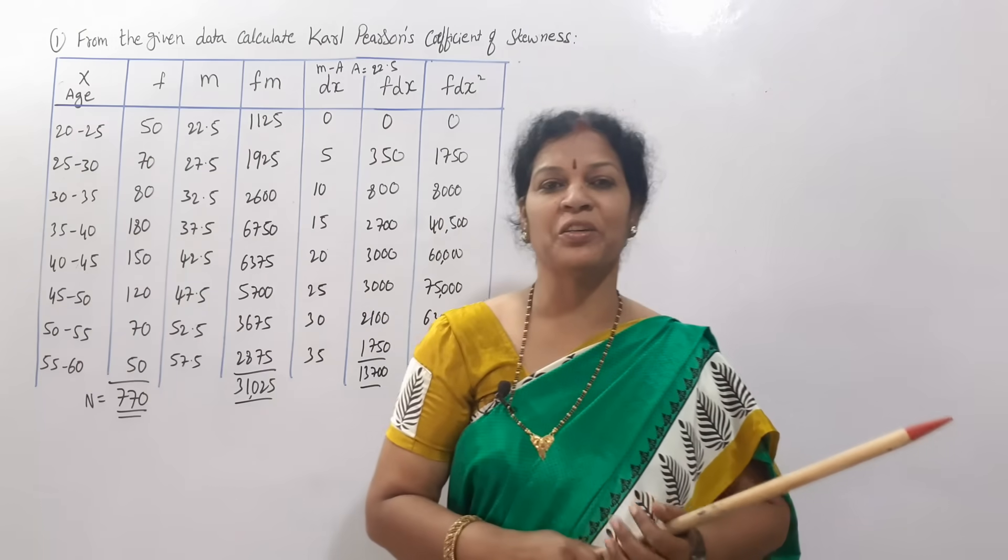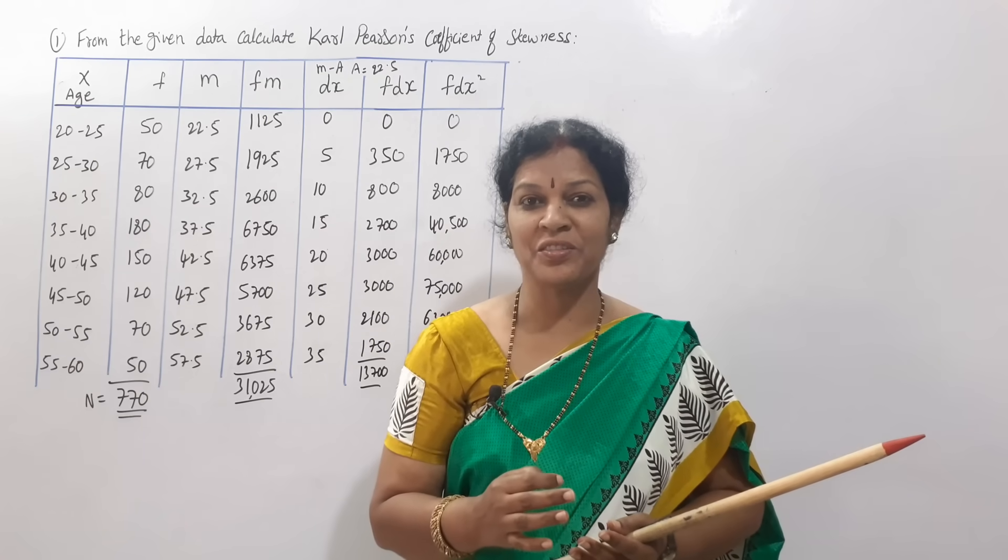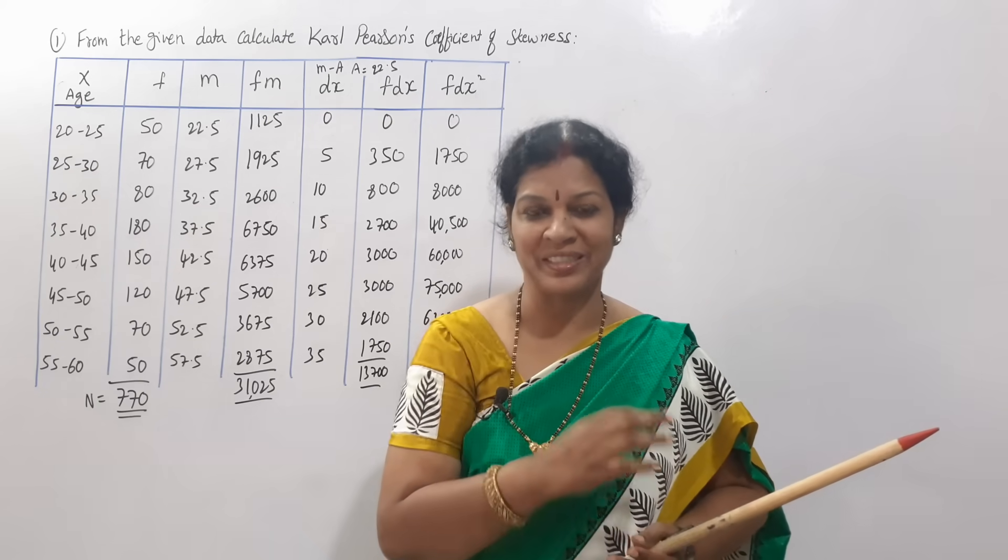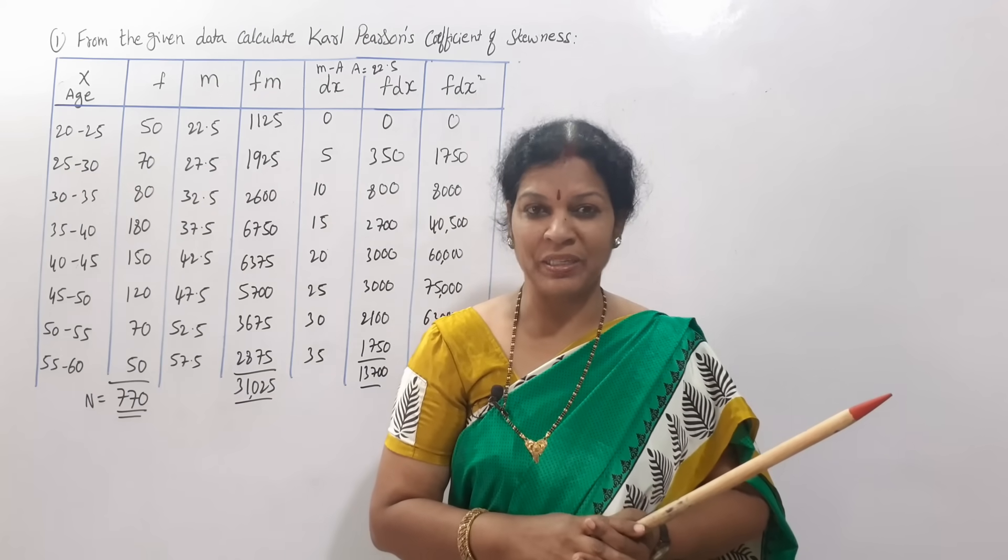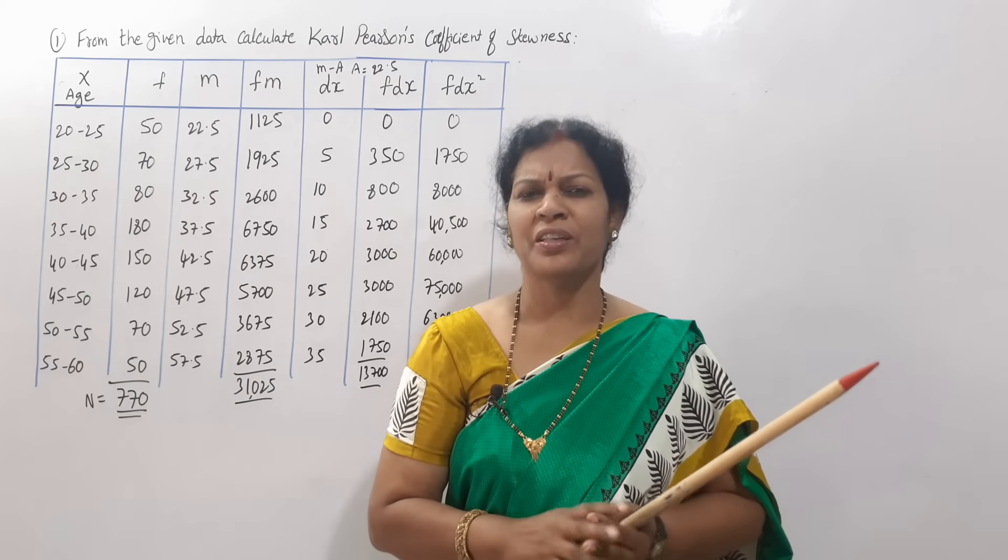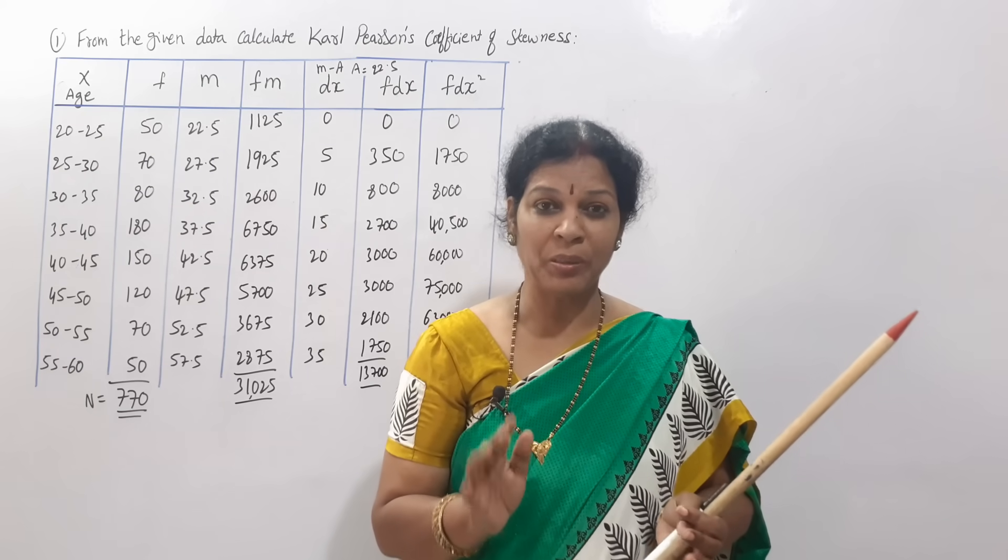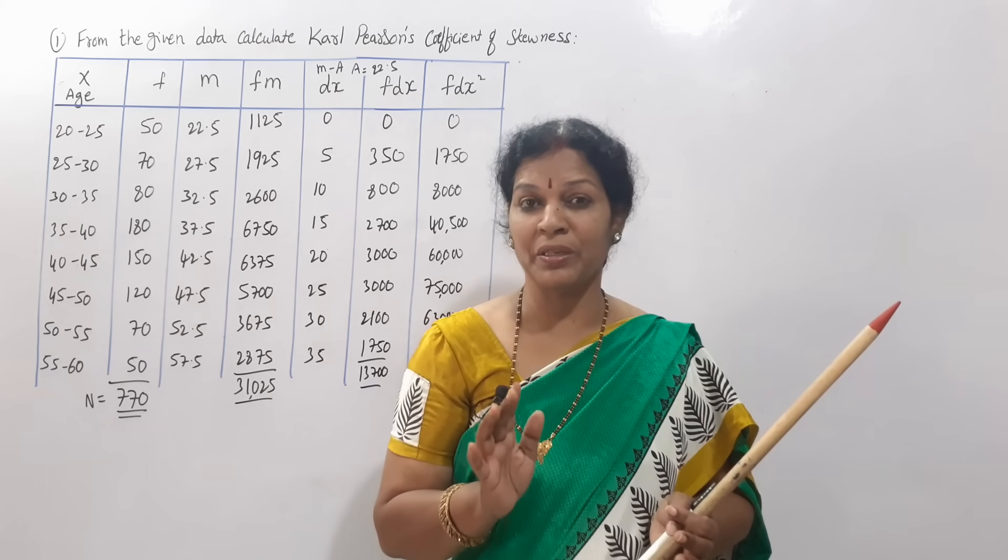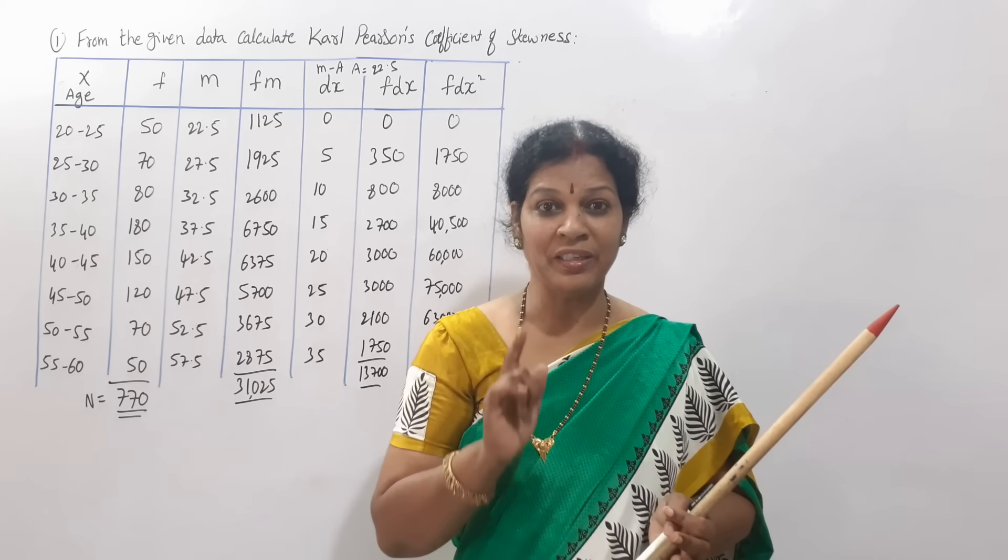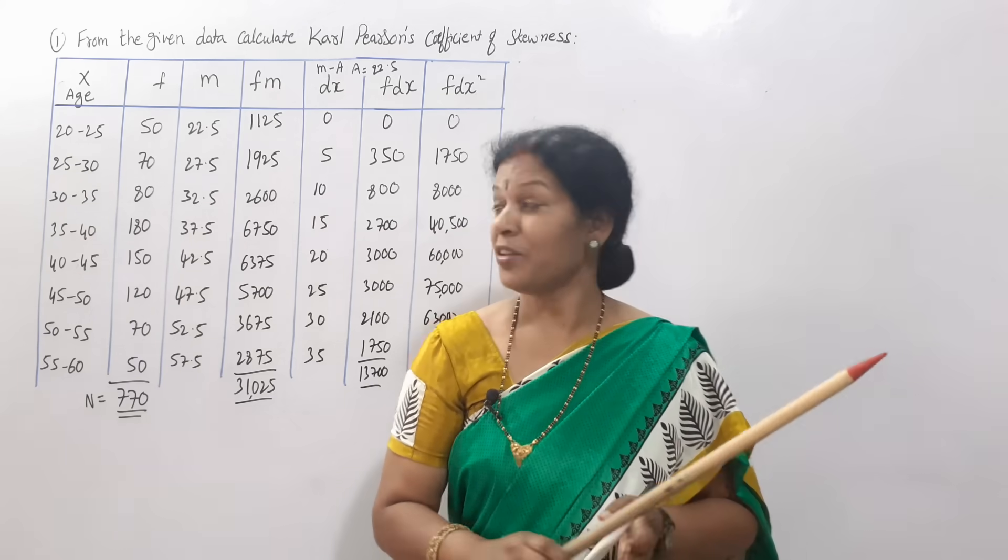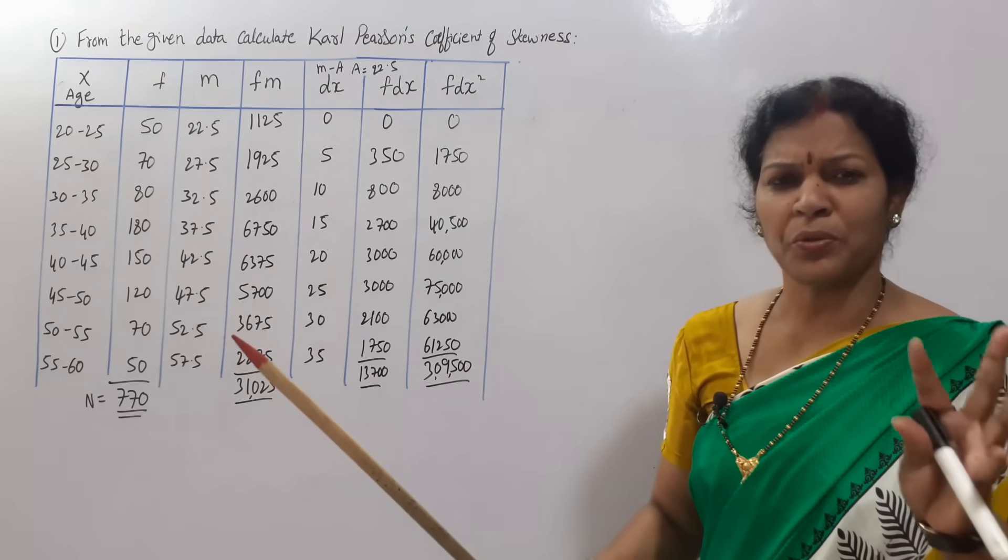Hello dear students, welcome to Deviko's Commerce and Management Academy. Today we'll see Karl Pearson's coefficient of skewness. How do we calculate the skewness SKP? Through a problem I'll explain it very clearly. What is the formula of Karl Pearson's skewness? X bar minus z by standard deviation.